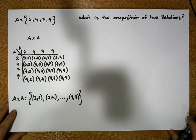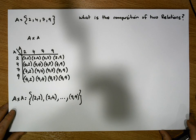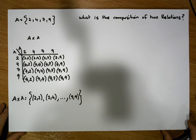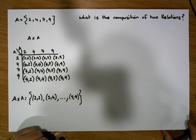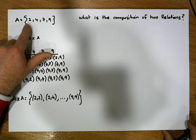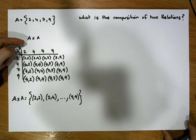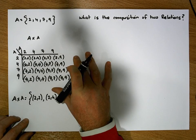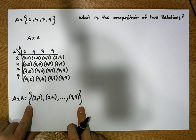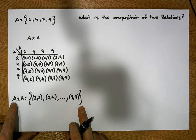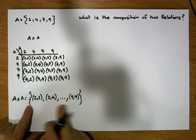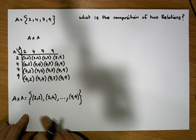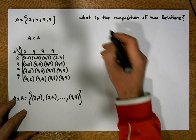Once again, like all previous videos in this series when we've been talking about relations, we have a particular set — in this case A contains the elements 2, 4, 7, and 9. We've constructed the cross product of A with itself. This table helps us identify all the ordered pairs in the cross product, and our relation is simply a subset of this cross product.